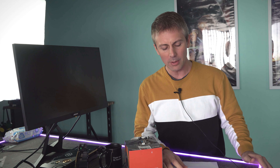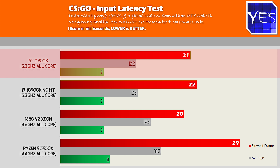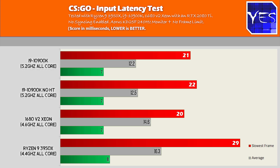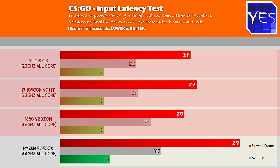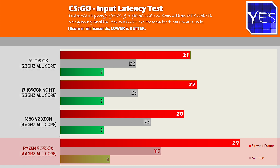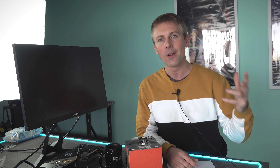CSGO showed a similar trend to Fortnite. We got 12.2 milliseconds average on hyper-threading, and virtually the same on no hyper-threading for the 10900K — so it's really not going to make a difference for your games. The Xeon scored 14.6 milliseconds average, and the Ryzen 3950X scored 16.3 milliseconds. The best frame we scored was seven milliseconds on both the Xeon and the Intel, and eight milliseconds on the 3950X. So even the best-case scenario from your hardware is only about one millisecond difference — not enough to determine whether you'll be good or bad at a game.